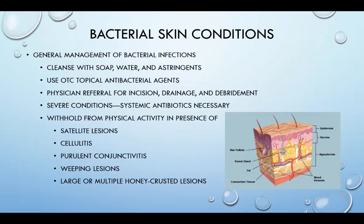The general management of bacterial lesions includes cleansing the area with soap, water, and astringents, using over-the-counter topical antibacterial agents, and referring to physicians for incisions, drainage, or debridement as necessary. In severe conditions, a systemic antibiotic may be necessary. We want to withhold individuals from physical activity in the presence of satellite lesions, cellulitis, periorbital conjunctivitis, weeping lesions, or large or multiple honey-crusted lesions. Cellulitis, furuncles, and carbuncles are not significantly contagious, but continued trauma to involved areas can lead to systemic complications. Suspected impetigo requires isolating the infected individual including athletic clothing and towels to prevent spread.